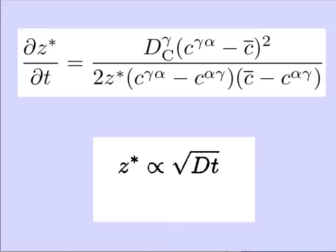Have you come across this anywhere before? Oxidation - exactly. As the oxide grows, the metal has to diffuse through thicker and thicker layers, and therefore the diffusion distance increases and the growth rate slows down with time.